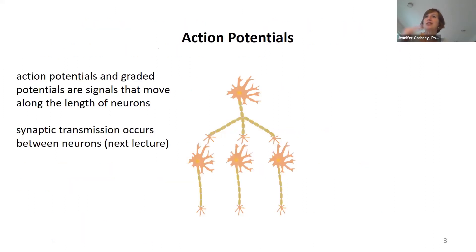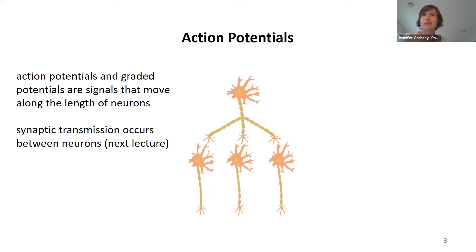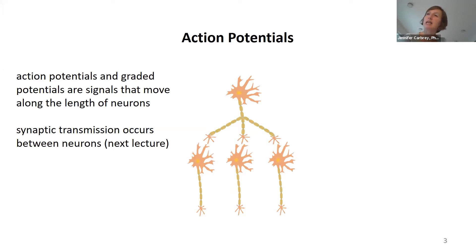I just saw in the chat people were asking about how this relates to yesterday's talk and when you learned about cell types. Neurons are one of the major cell types in the nervous system. They're going to be important for processing information and sending signals throughout the body and throughout the nervous system. Action potentials are going to be signals that travel along the length of axons and neurons.